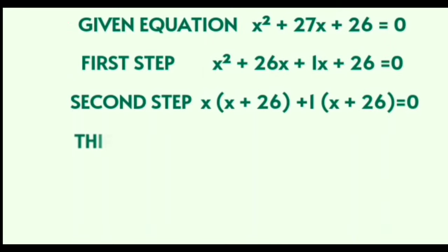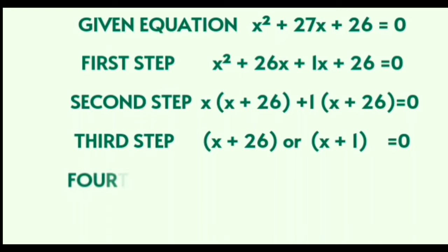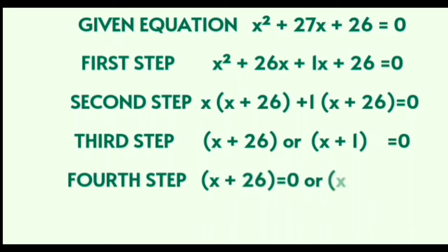The third step is to take x plus 26 as one term and x plus 1 as another term, giving us the bracket x plus 26 times bracket x plus 1 is equal to 0. The fourth step is to take each factor individually equal to 0: x plus 26 equals 0, or x plus 1 equals 0.